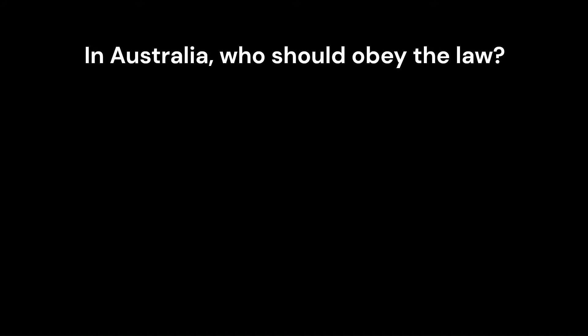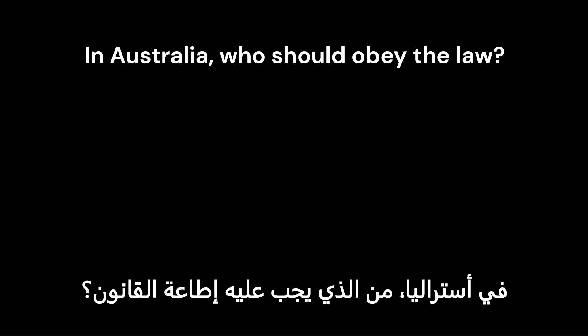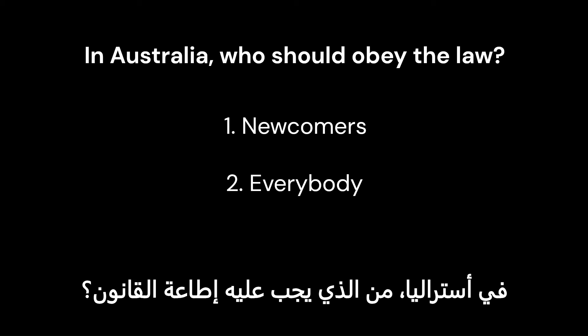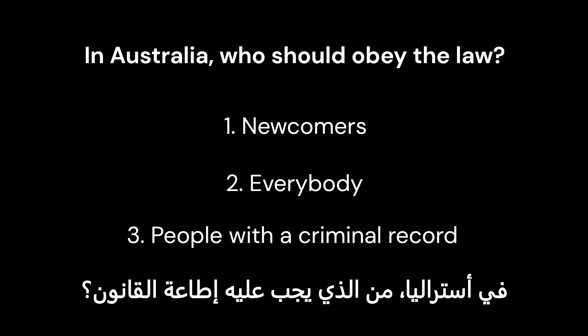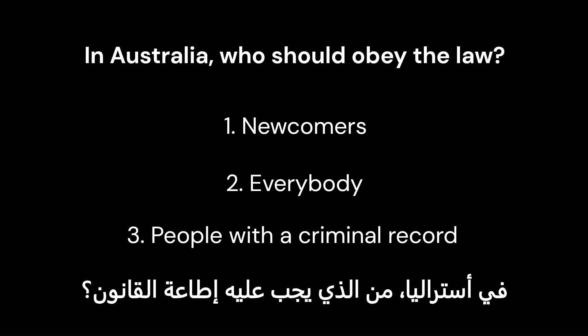In Australia, who should obey the law? 1. Newcomers. 2. Everybody. 3. People with a criminal record. Exactly, that is right. 2. Everybody.